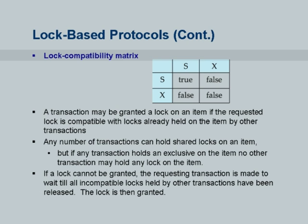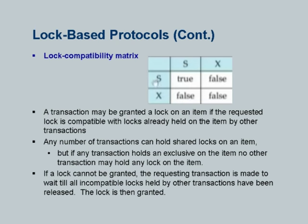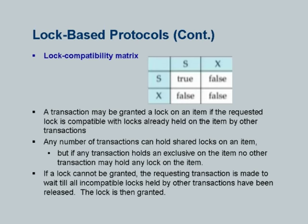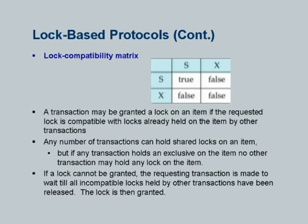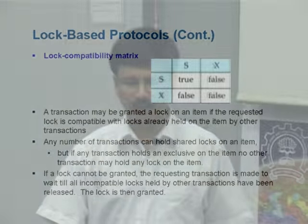There is a notion of a lock compatibility matrix, which is very important. When you have just these two lock modes, S and X — shared lock and exclusive lock — the compatibility is as follows. S and S is true: if one transaction has an S lock and another requests an S lock, it is compatible. On the other hand, S and X are not compatible — if somebody has the S lock, another requesting the X lock cannot get it until the S lock is released. Similarly, X and X is also false. The compatibility is symmetric.